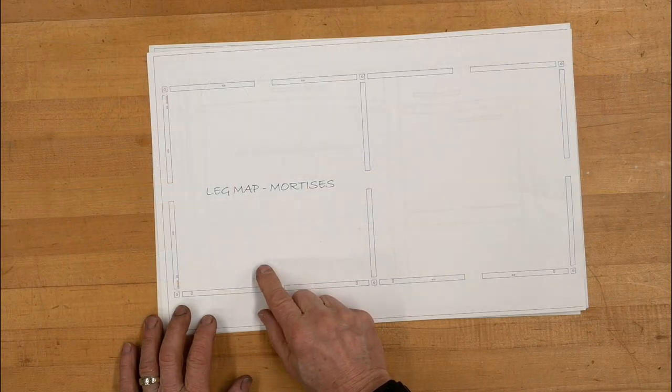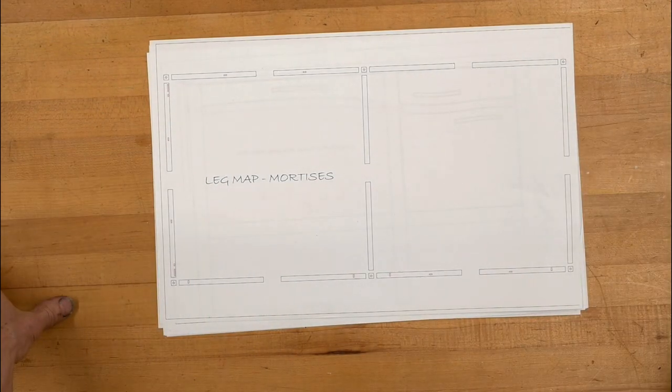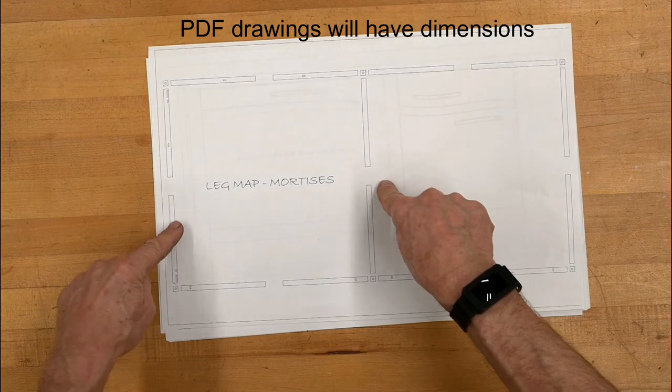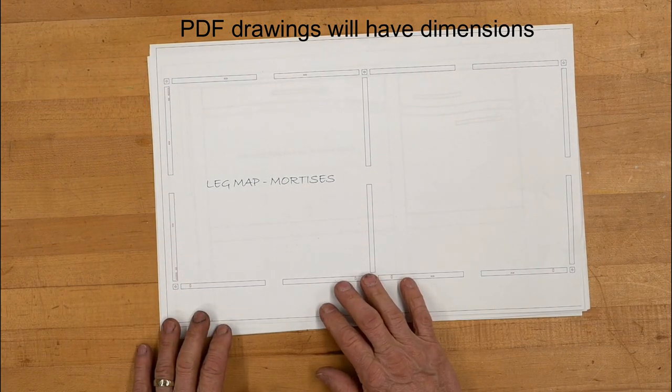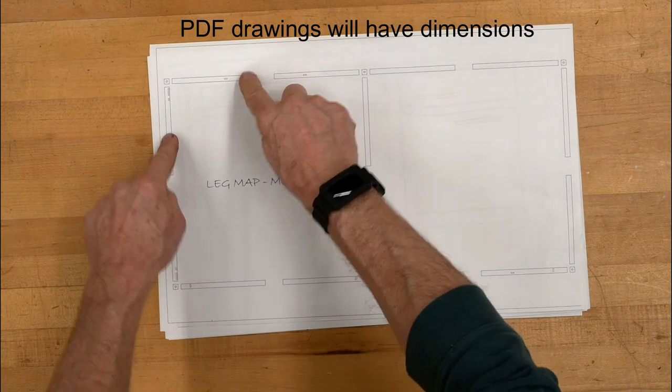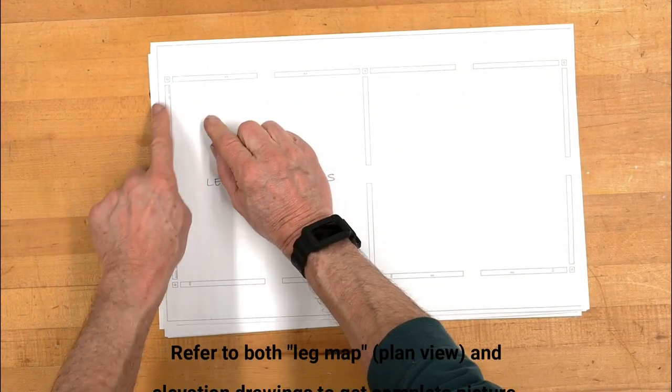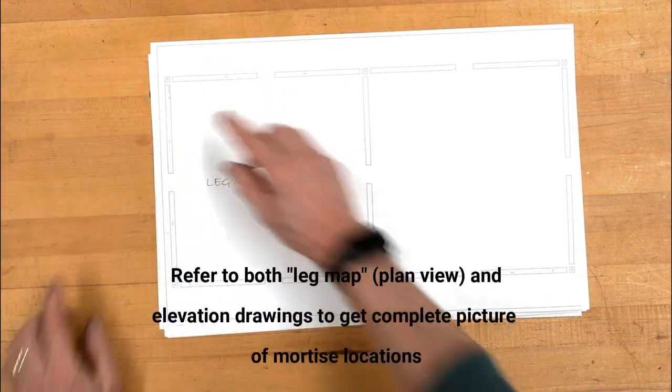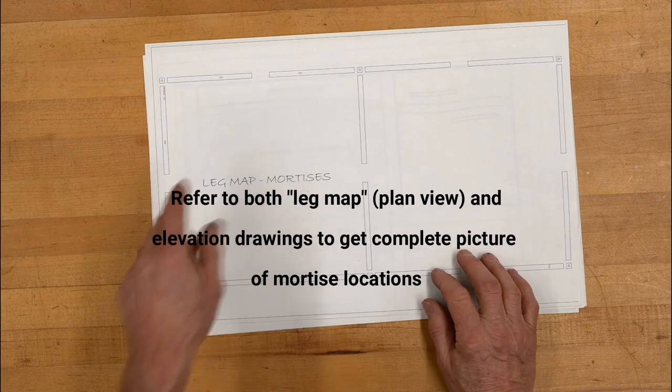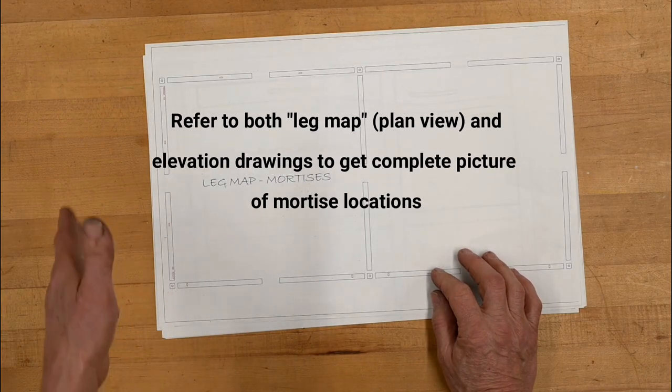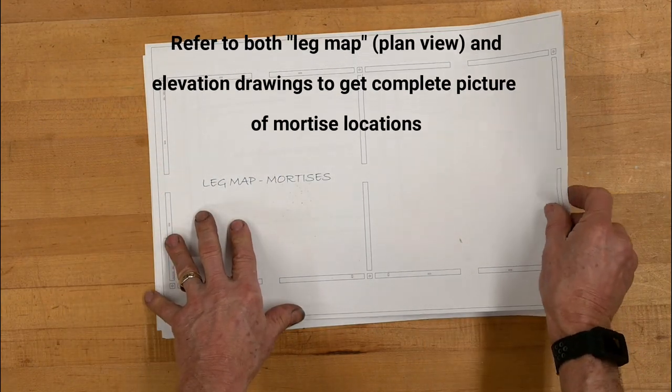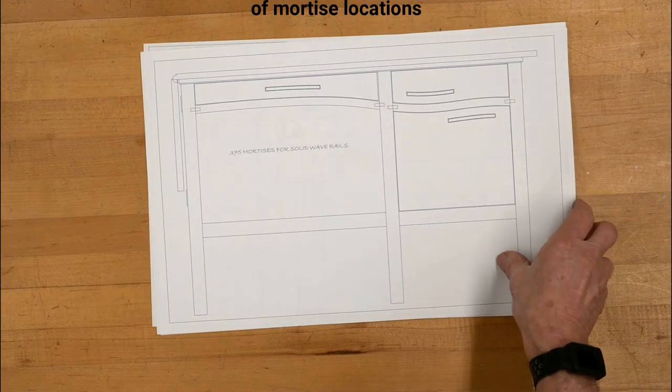I have a drawing that I call the leg map. It lays out all the legs, and each leg—any leg that has any machining done on it—is laid out like this. If there's no machining, there's no view coming out that end. So that's a reference for getting dimensions of the location of the mortises.